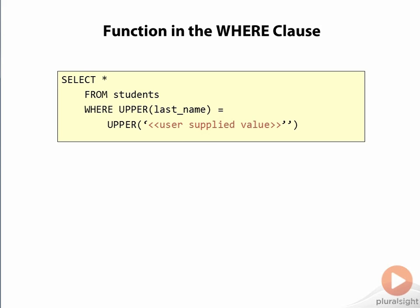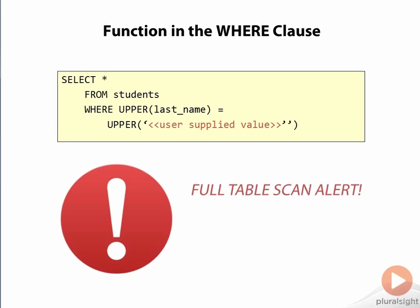By using a function in the where clause like this, Oracle will no longer be able to use any indexes that may exist on the last name column of our table, and will instead resort to a full table scan to get the data.